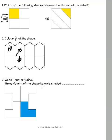Write true or false. Three-fourths of the shape below is shaded. It's only one portion which is shaded, so this is false. Let me write F for that.